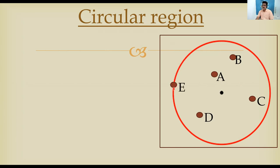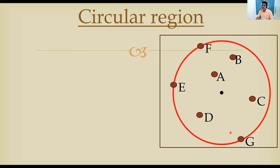Now E is a point which is on the circle — not interior, but on the circle. F is a point also on the circle. G is a point also on the circle. So I have given some points which lie in the interior of the circle and some which lie on the boundary of the circle.